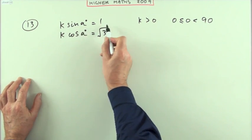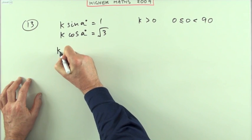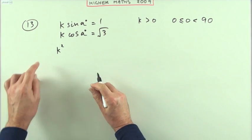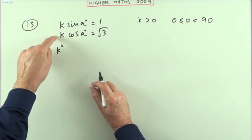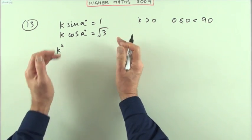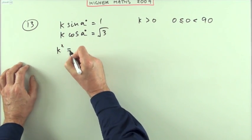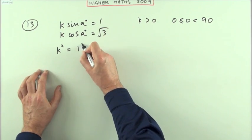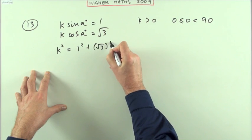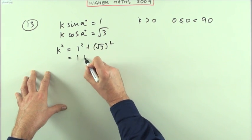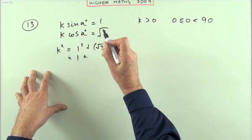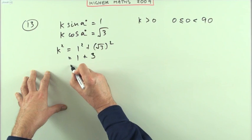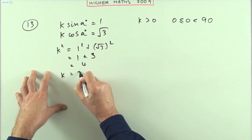One way of doing that is to square and add them. If you square and add the two equations, you would have k² sin²a + k² cos²a, which equals k² (sin²a + cos²a), which is just k². You can remember it like Pythagoras: k² = 1² + (√3)² = 1 + 3 = 4, so k = 2.